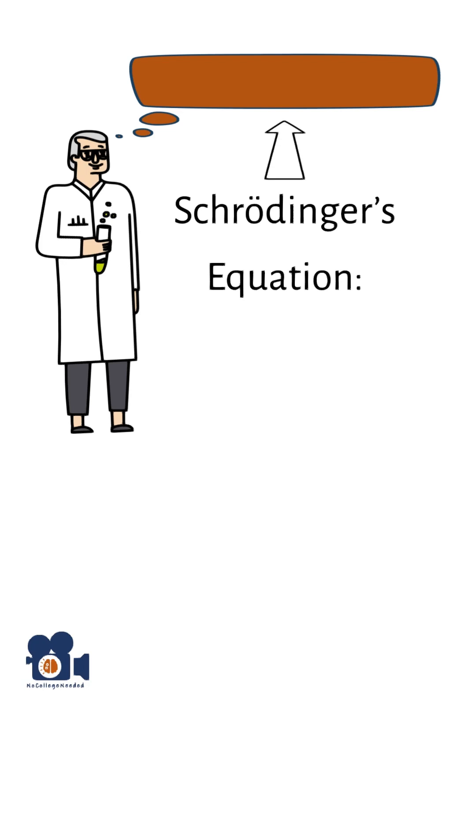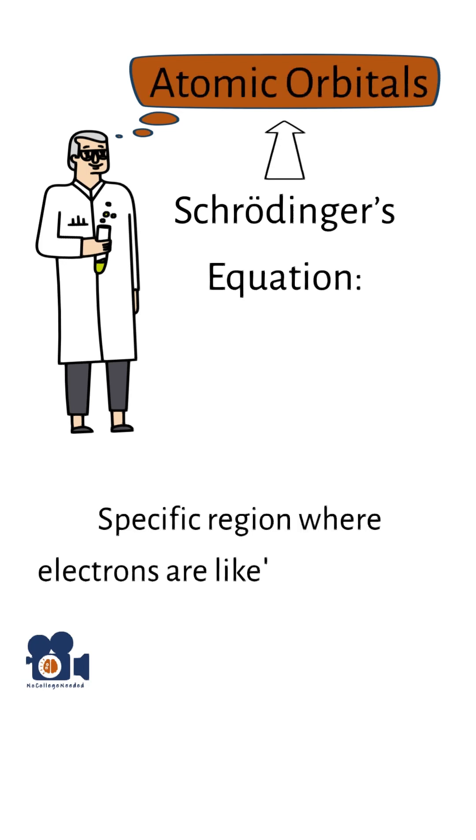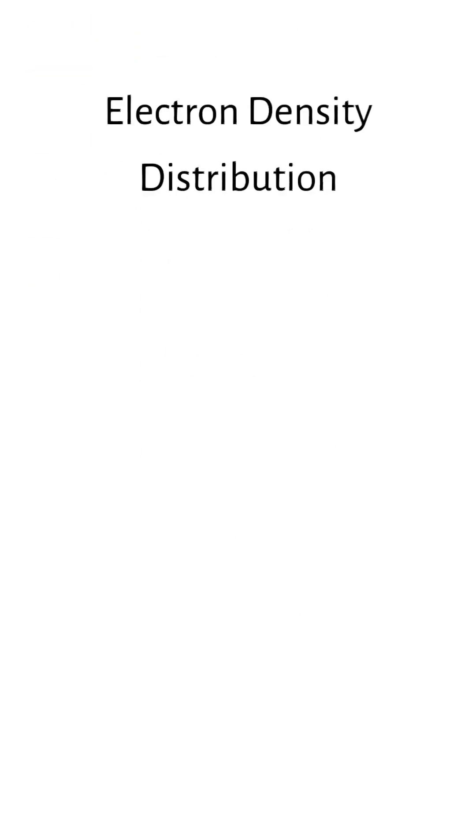It's from Schrödinger's equation that scientists get the concept of atomic orbitals, which are specific regions where electrons are likely to be found. Schrödinger's equation provided an electron density distribution, which is a probabilistic view of where electrons can be.